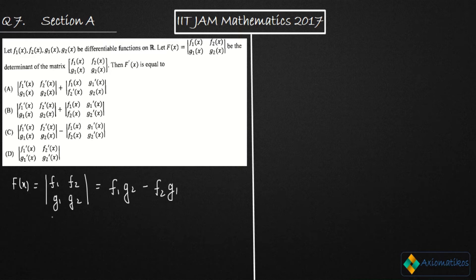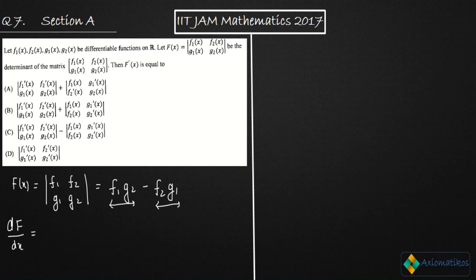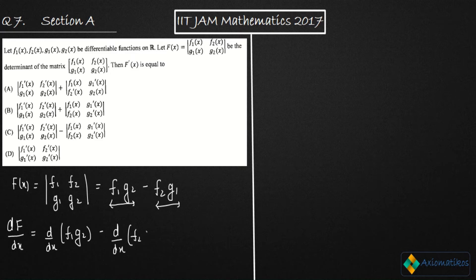Now you have to differentiate this. This is nothing else but the product of two functions. This one is the product of two functions, and this one is also a product — and their subtraction. So if you differentiate it, it's a single variable function with respect to x. Just apply the product rule on both terms and write your result.